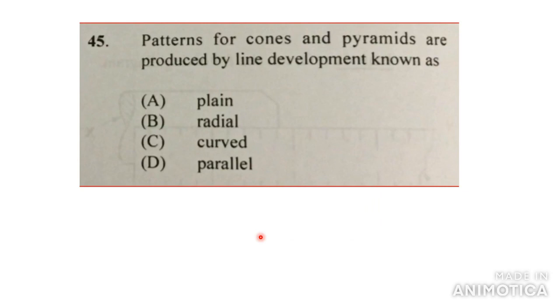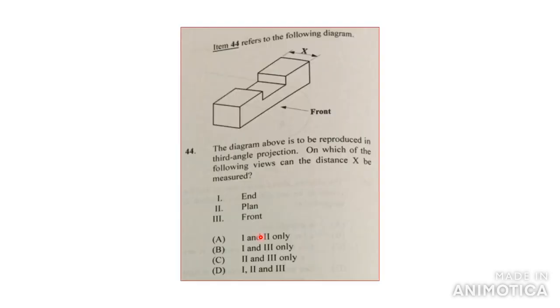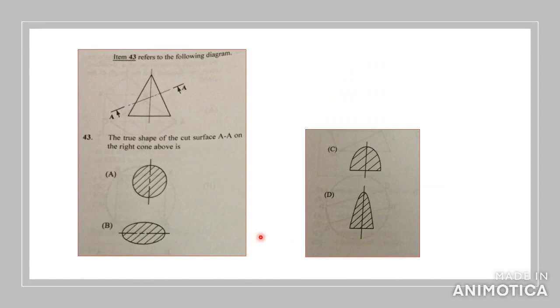Patterns for cones and pyramids are produced by line development, known as. Usually for cones and pyramids, if you cut them out, they are truncated, you would use a parallel hatch inside of the portion that you cut up. So there would be parallel lines, and in the question right here you can see them, they are in parallel lines.